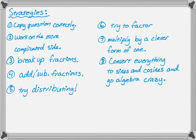Try distributing or try factoring, so they kind of come in pairs. Multiply by a clever form of one, we're not going to do that in this video, but that's a very important strategy. Then convert everything to sines and cosines and just go crazy with the algebra. That's kind of a last ditch effort, but sometimes you can't avoid it.